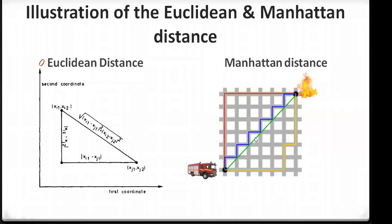For a real-world analogy: imagine there is a fire and a fire truck needs to reach it. If you could travel in a straight line directly through buildings, that straight-line path is your Euclidean distance — the green line. But a fire truck must travel along roads, not through the air. The path it takes along the roads is your Manhattan distance — shown as the red line.